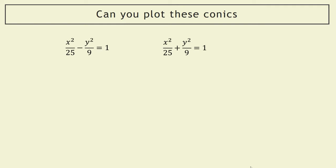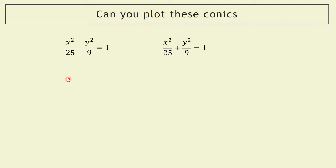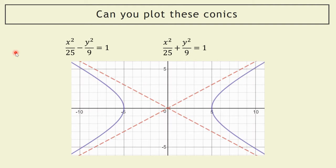Let's have a look at the solutions. This first one has got the minus on the left-hand side, so this is a hyperbola — that's what we were looking at last time. Stepping through that, a is 5 (square root of 25) and b is 3 (square root of 9). The vertices are going through 5 and minus 5 on the x-axis, and the asymptotes are y equals plus or minus three-fifths of x, because we get the 3 and the 5 from those values.